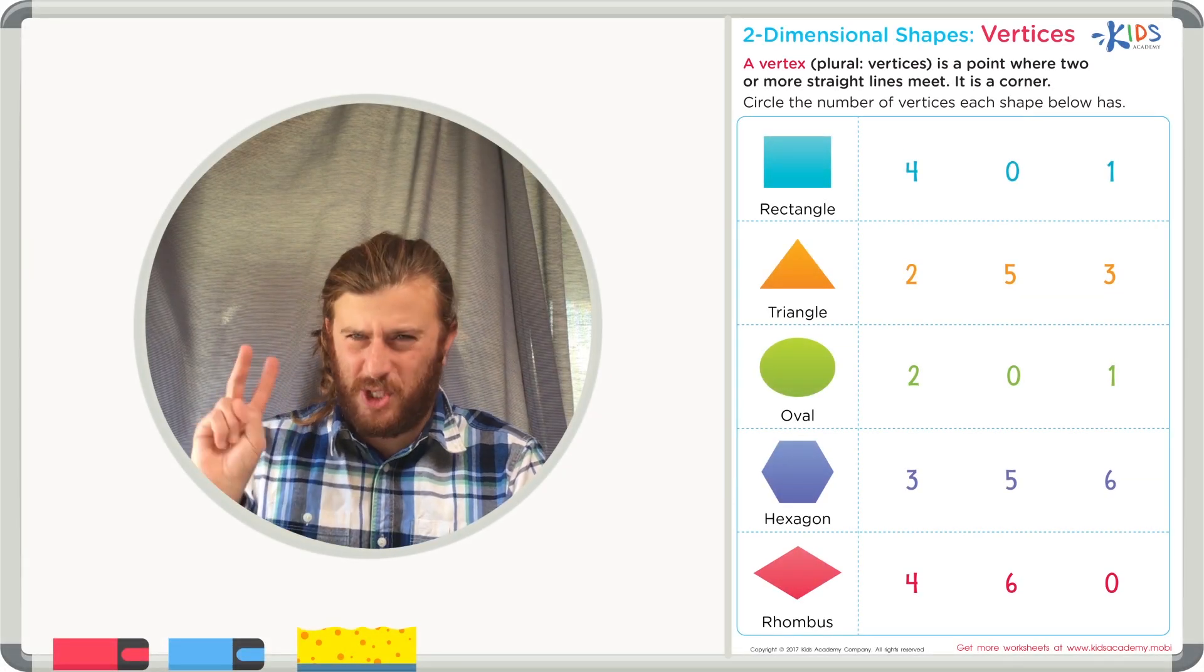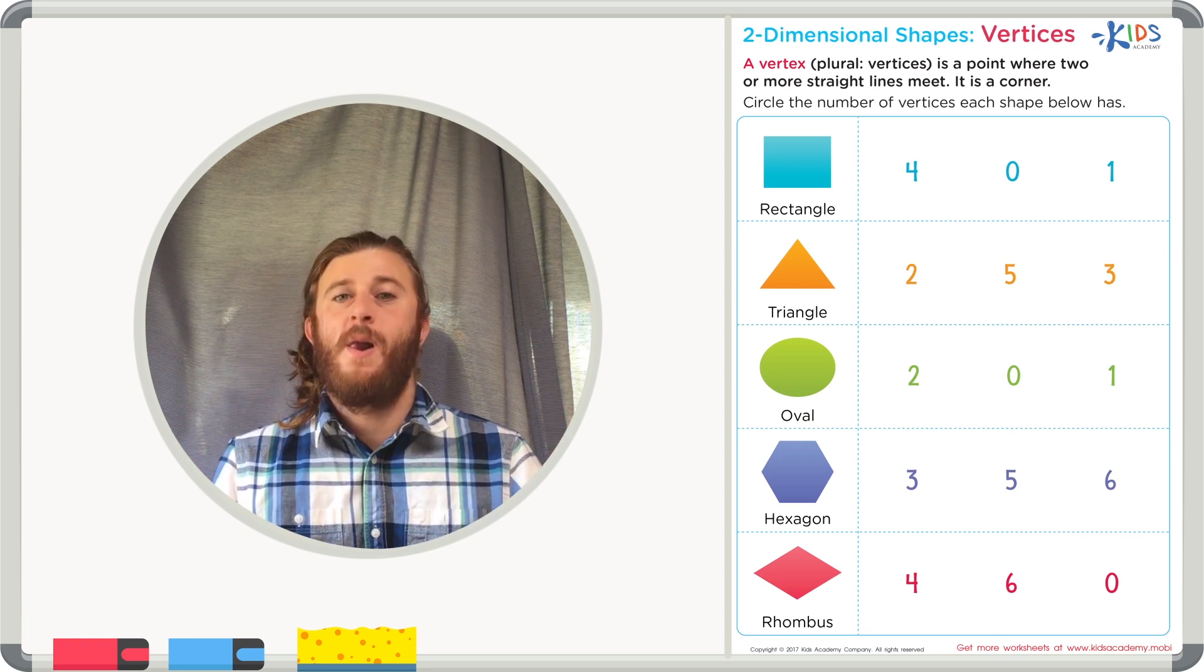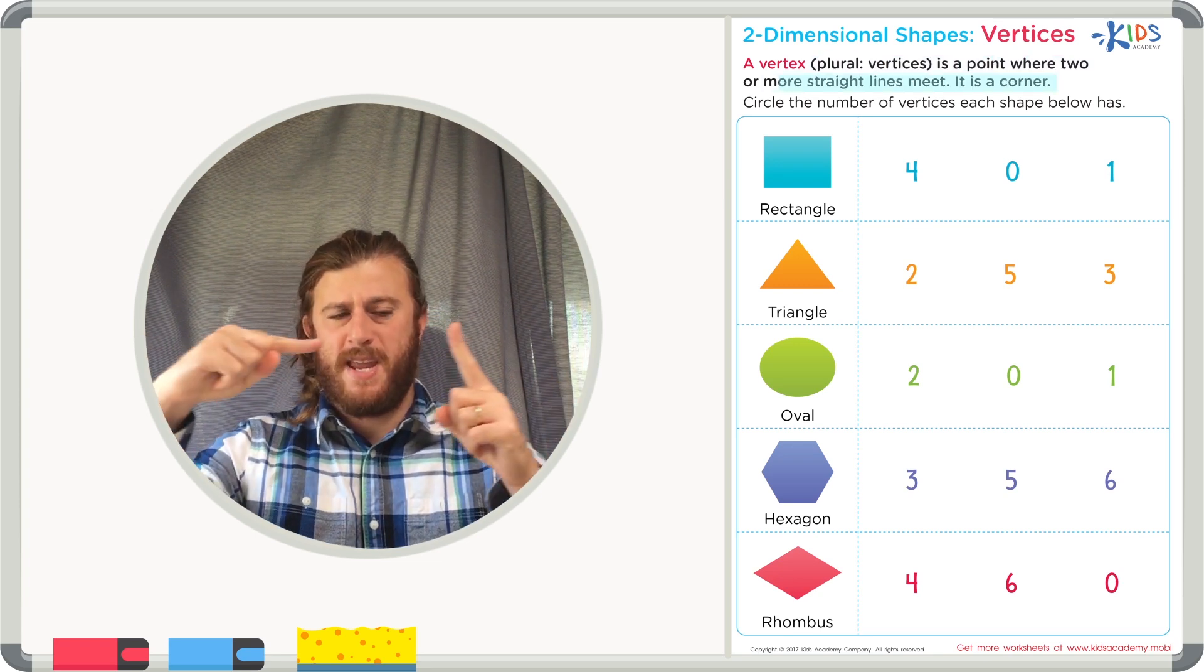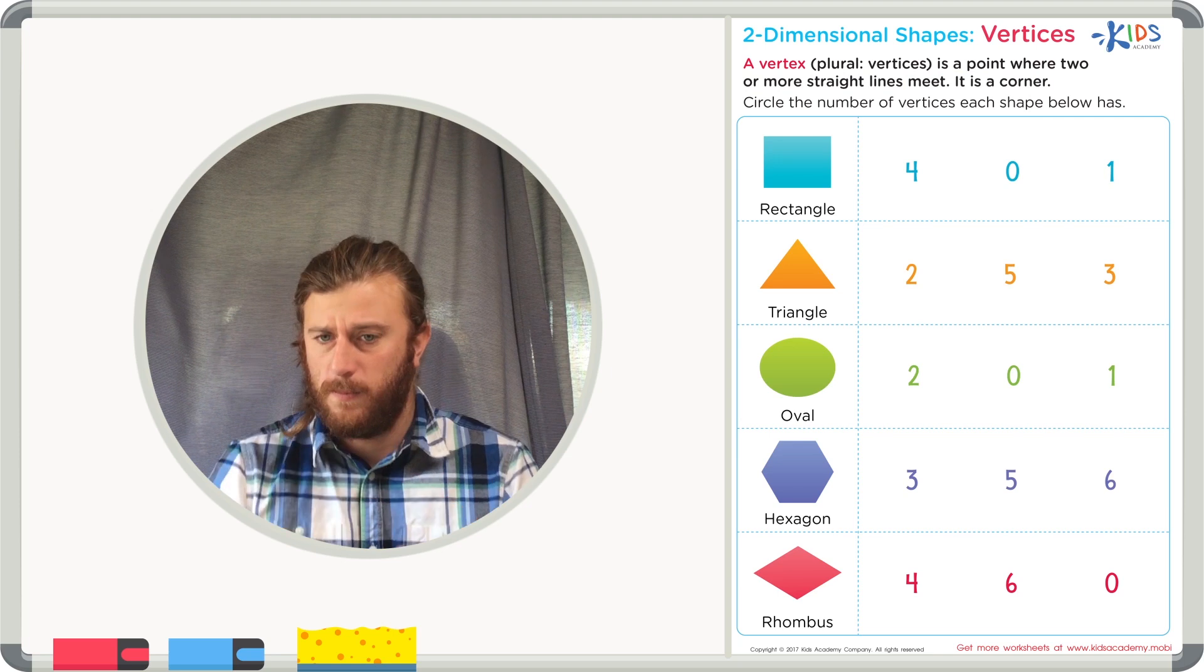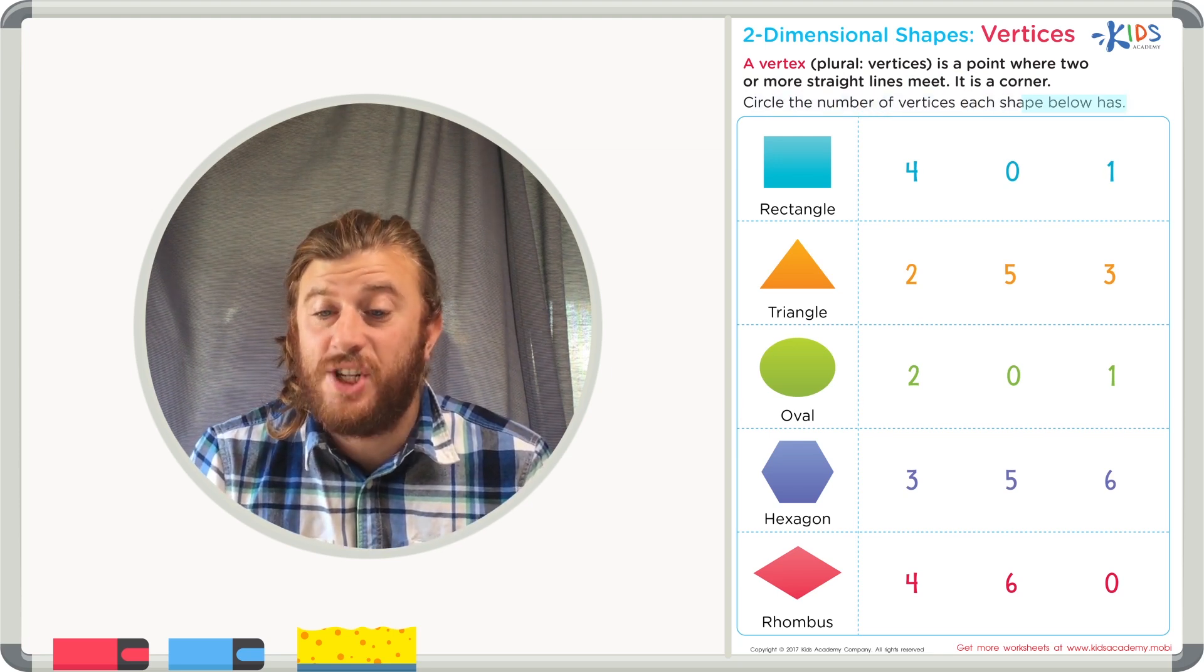Today we're going to be looking at some two-dimensional shapes and their vertices, or their vertex. A vertex is where two straight lines meet to form a corner. Circle the number of vertices in each shape below.